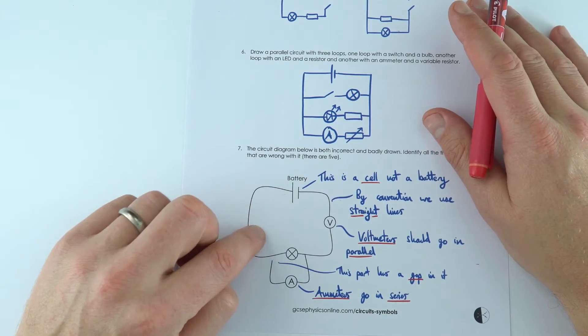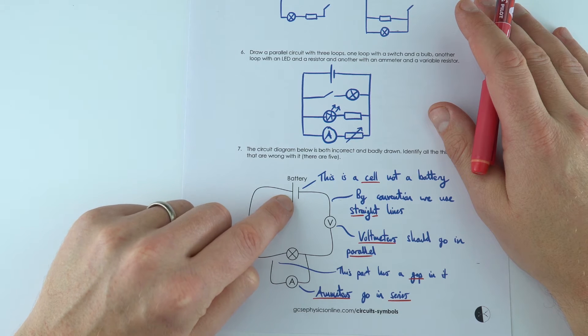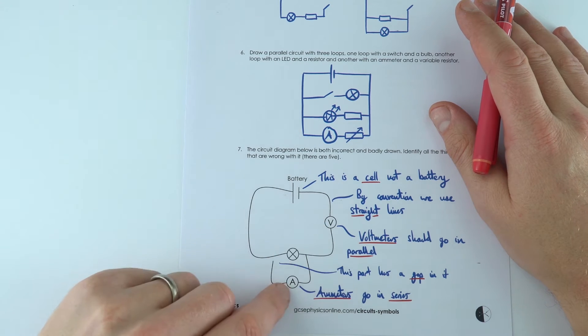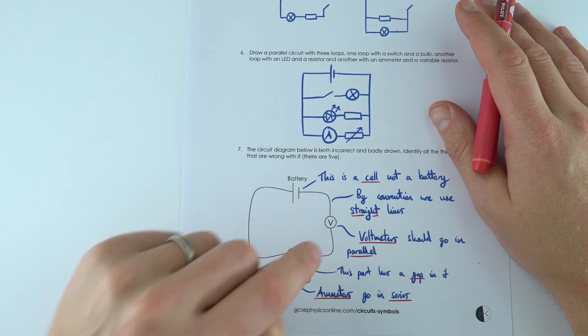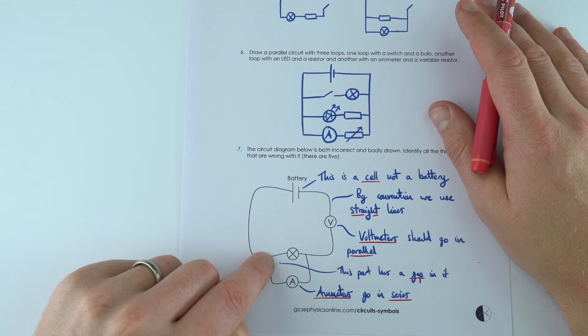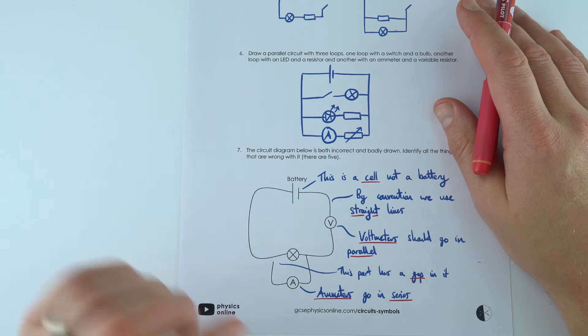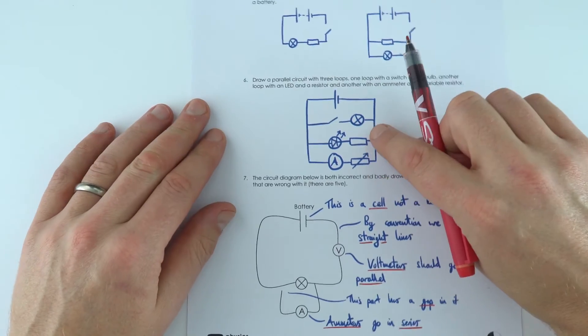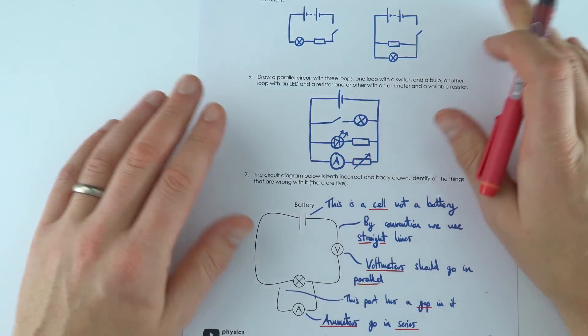And finally there's a few mistakes with this one, so that's a symbol for a cell, not a battery, even though it's labeled battery above it. The voltmeter should be in parallel and this ammeter should be in series. The lamp should have the connection going across it so we don't want to leave gaps in our circuits and again just by convention we tend to draw things with straight lines like in the diagrams up here rather than curly lines like down there.